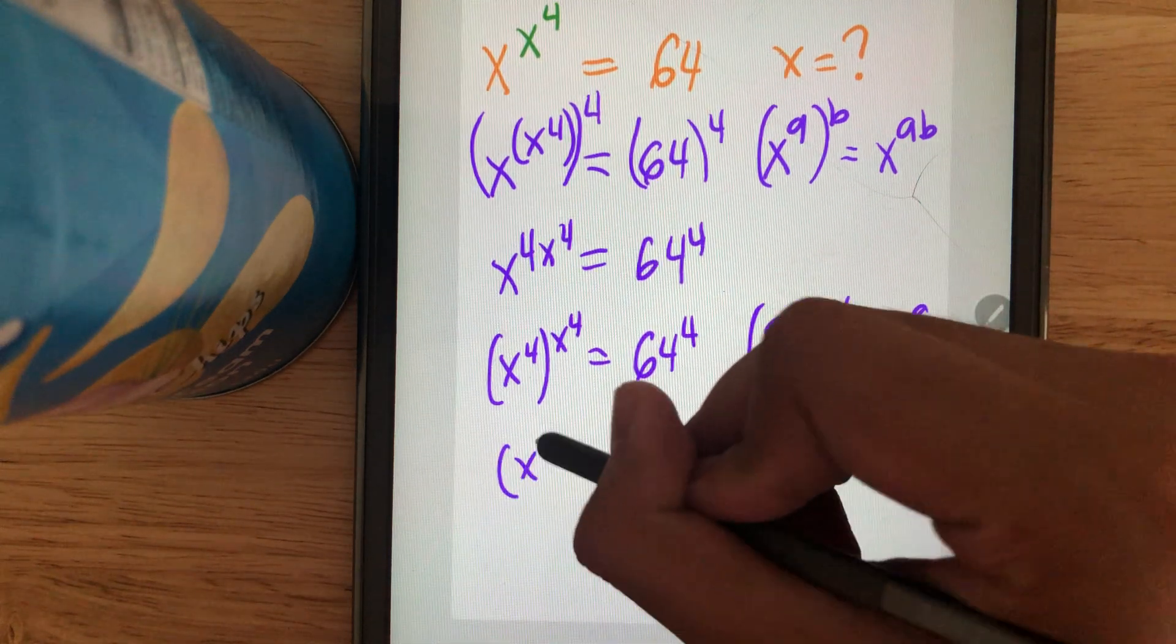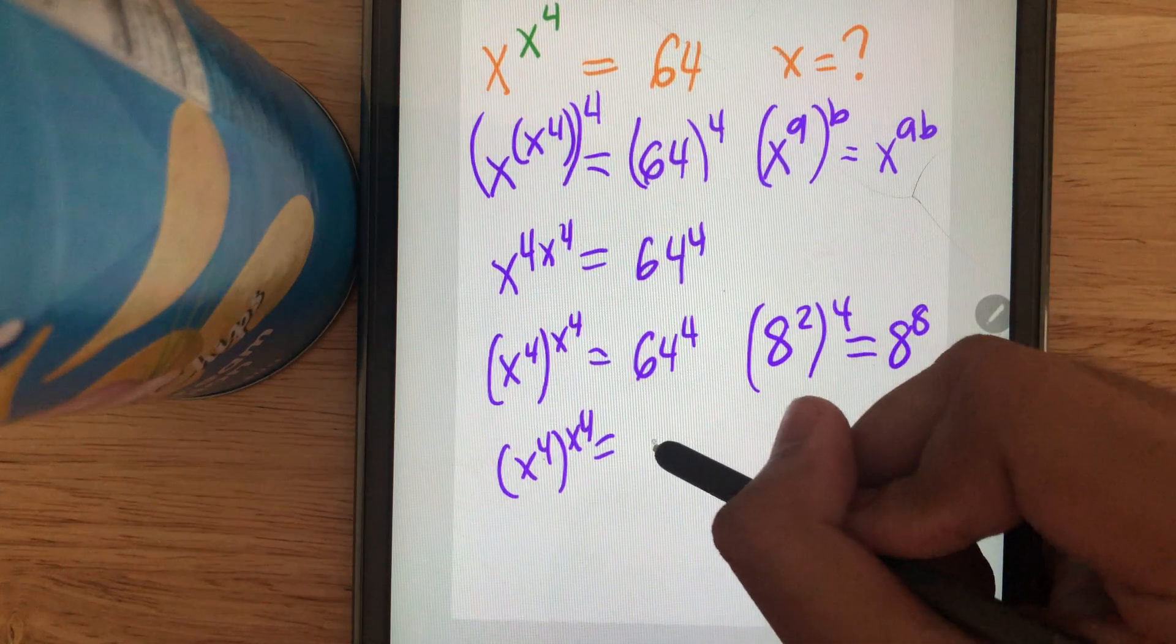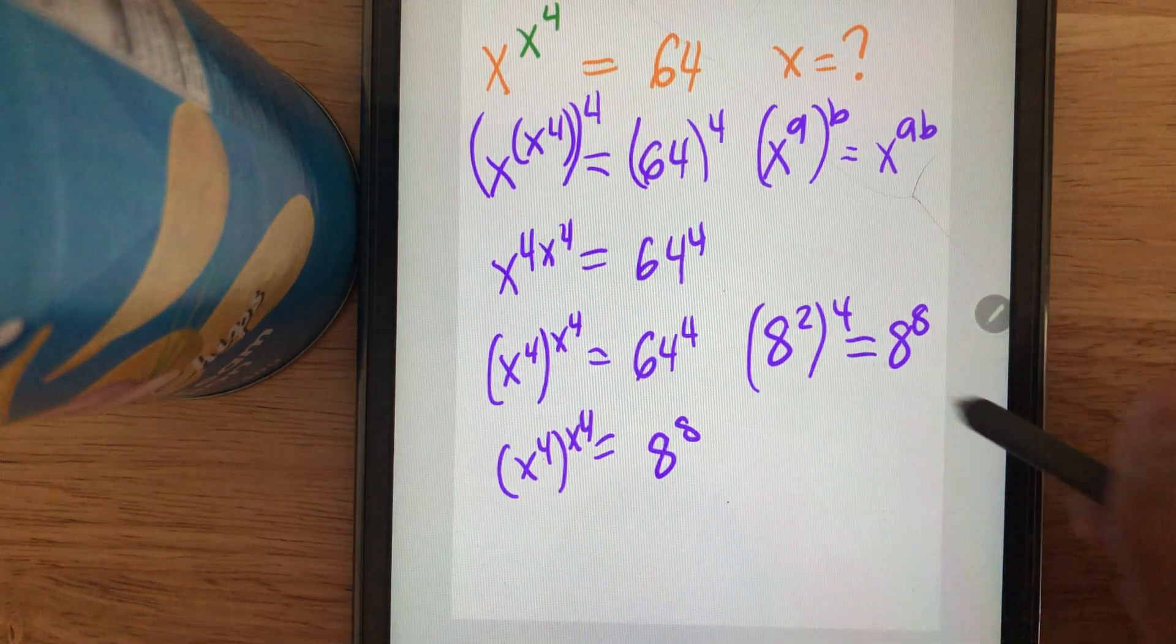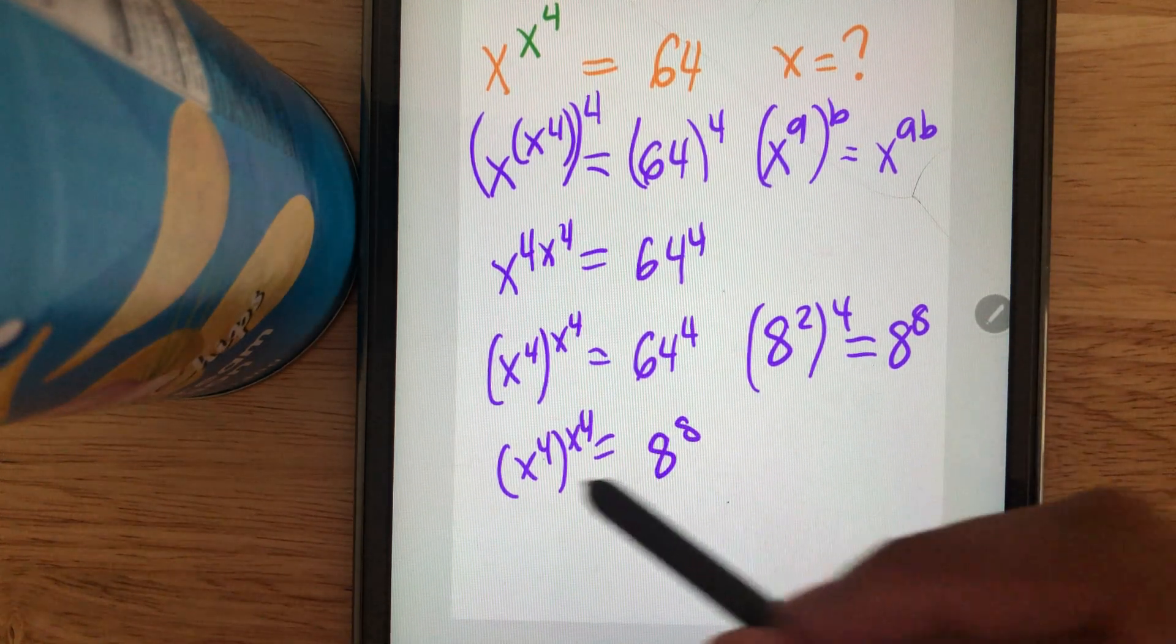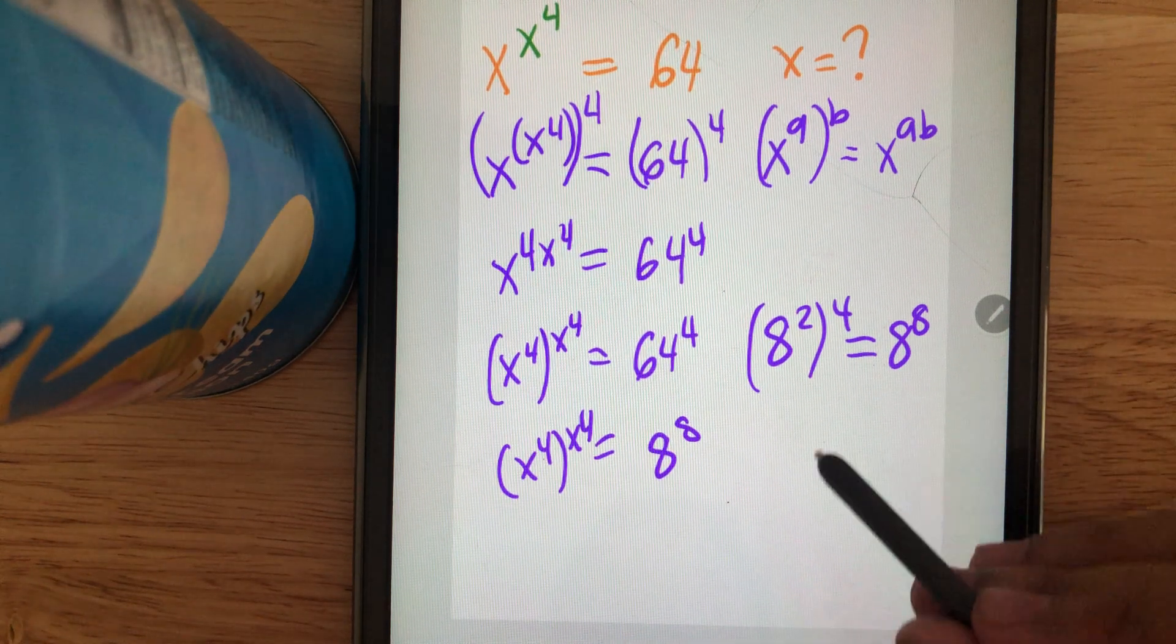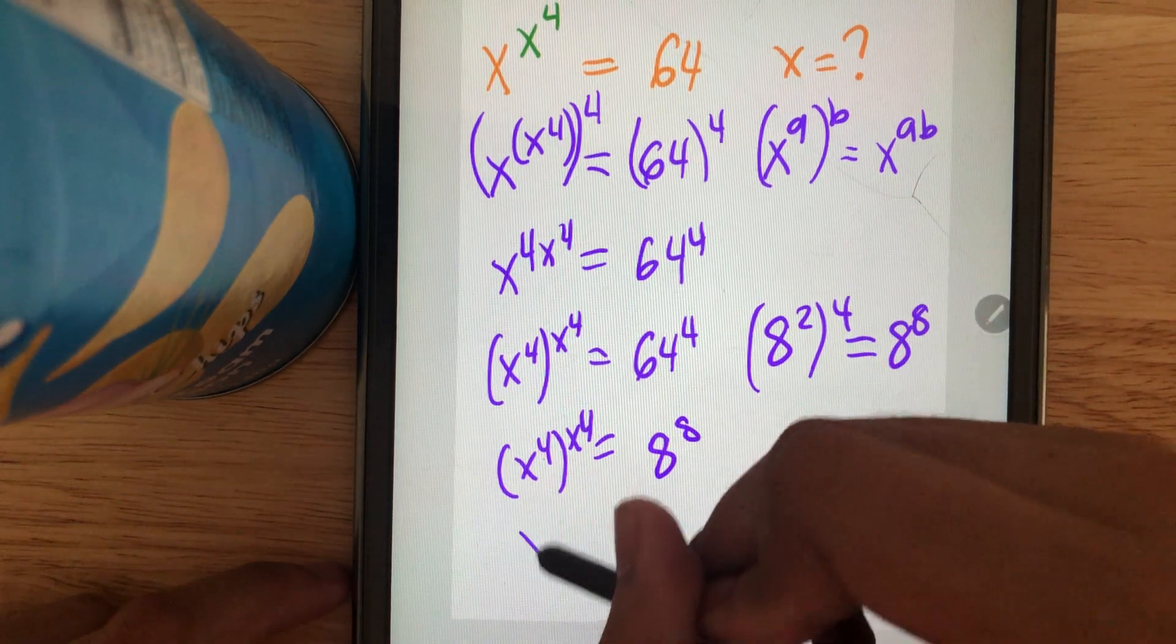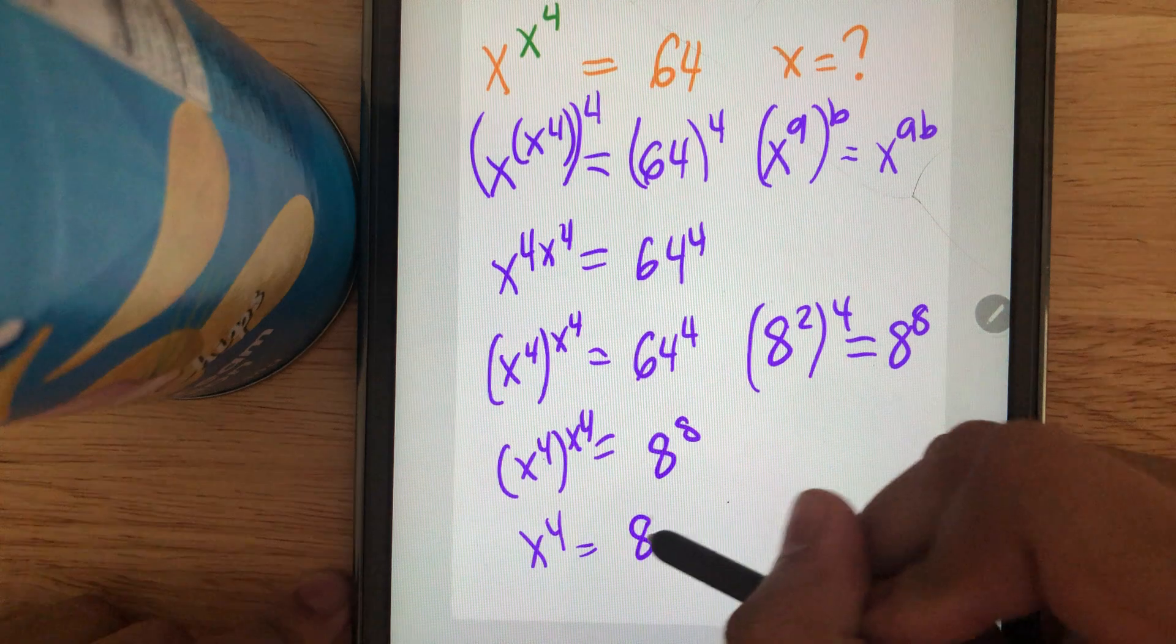So (x^4)^(x^4) = 8^8. Both sides have the same base and exponent, so we can conclude that x^4 = 8.